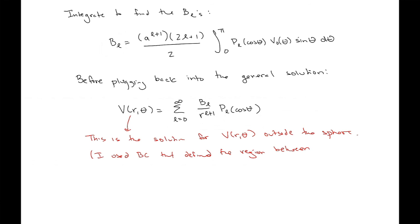This is the solution here for V(R,θ) outside the sphere, and that's because I use boundary conditions that define the region between the shell and infinity. All right, so that's one example. I'm going to stop the video here and then I'll do another lecture and we'll talk about figuring out the potential inside the shell.